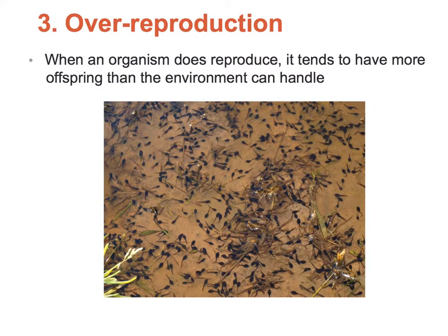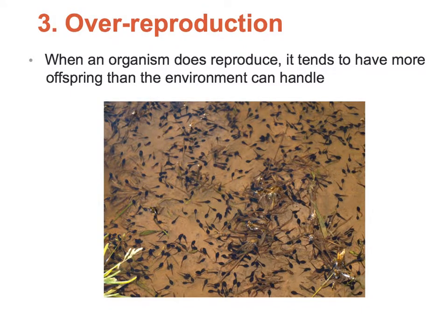Over reproduction — by creating lots of offspring, you increase the chances that some will survive. Malthus said that as population size increases, there become limited resources, so you start to compete. Here's a picture of probably 1,000 tadpoles. By creating 1,000 tadpoles with all their variations, hopefully one, two, or maybe even five of them would have the traits necessary to survive in a given environment. The huge production of offspring increases the likelihood that a couple will survive.